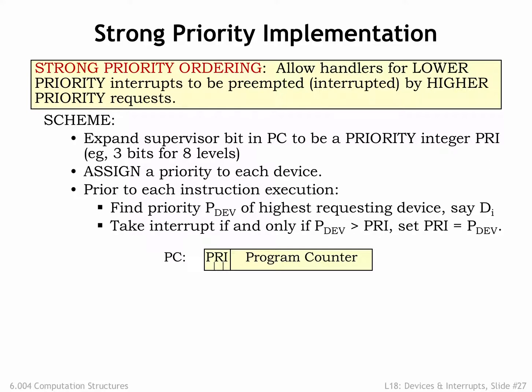Next, we'll modify the interrupt mechanism as follows. In addition to requesting an interrupt, the requesting device also specifies the 3-bit priority it was assigned by the system architect. We'll add a priority encoder circuit to the interrupt hardware to select the highest priority request and compare the priority of that request, PDEV, to the 3-bit PRI value in the PC. The system will take the interrupt request only if PDEV is greater than PRI — in other words, if the priority of the request is higher than the priority the system is currently running at.